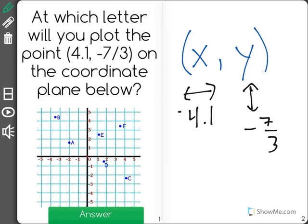And if we convert negative 7 thirds into a mixed number, we see that it is negative 2 and 1 third.